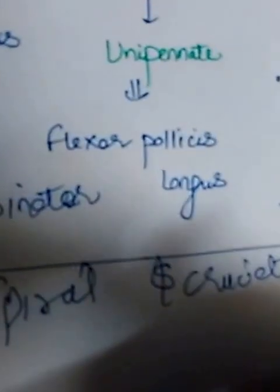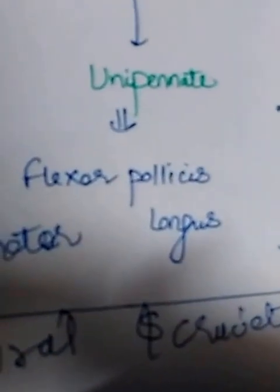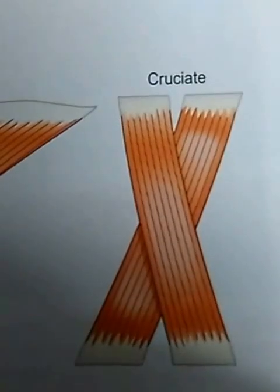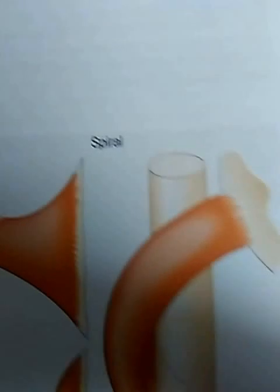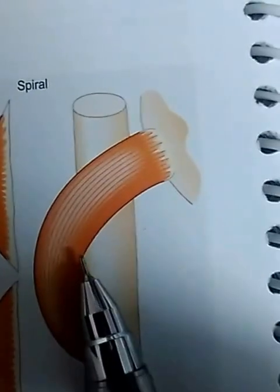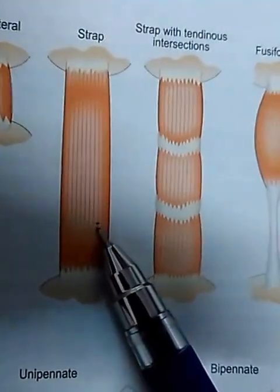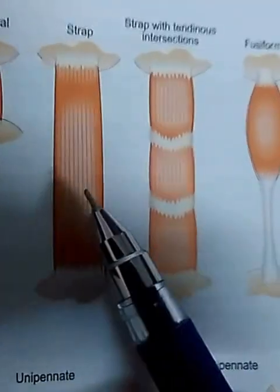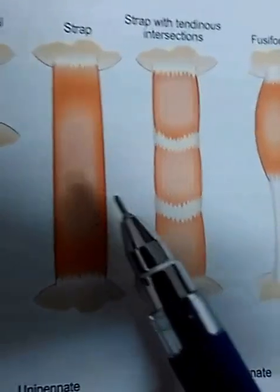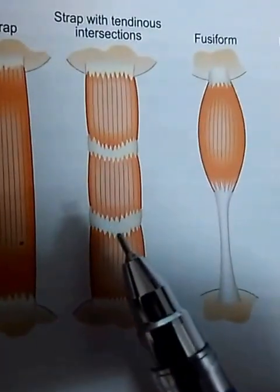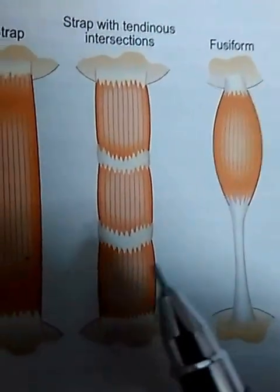Cruciate muscles have fibers arranged in different directions — they cross each other in different planes. As you can see here, these are the cruciate muscle fibers. These are the typical spiral muscle fibers, with the supinator as an example, and these are the parallel muscle fibers, like strap muscles.